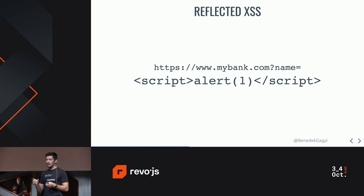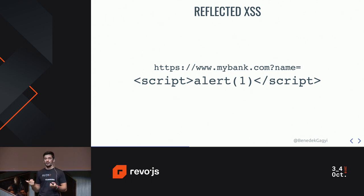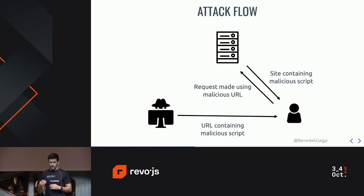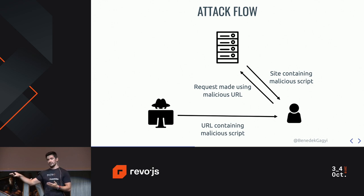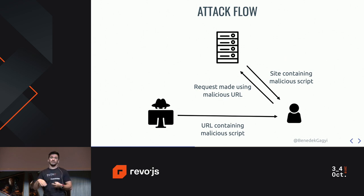Let's talk about reflected XSS. This is similar, but with a key difference. Imagine you have a URL, for example for a bank, where at the end you have a URL parameter where you expect a name or something simple, and the value of this parameter will be rendered into the site. What happens if instead of a name, you put a malicious script? If there's no sanitization, it will actually be rendered into the page for a victim. In this case the attack flow is slightly different. The malicious script is written by the attacker, but then it's not sent to the server — it's put into a URL, basically a link, and then it's sent to the victim. So if the victim clicks on this link, they send a request to the server, but this request will contain the malicious script, and if it's a server-side rendered app, the server will render the attacker's script into the site. So when it's downloaded back, it becomes part of the page, it runs, and bad things happen.